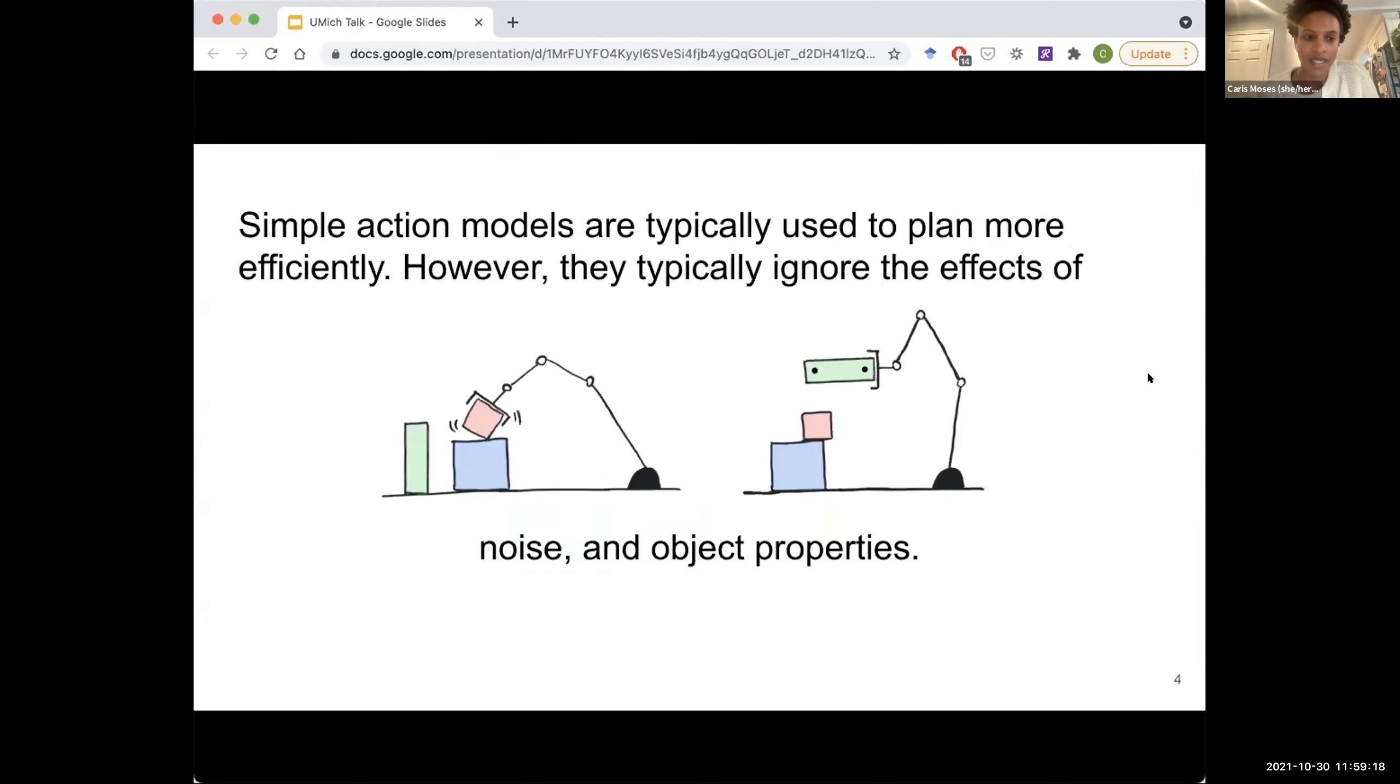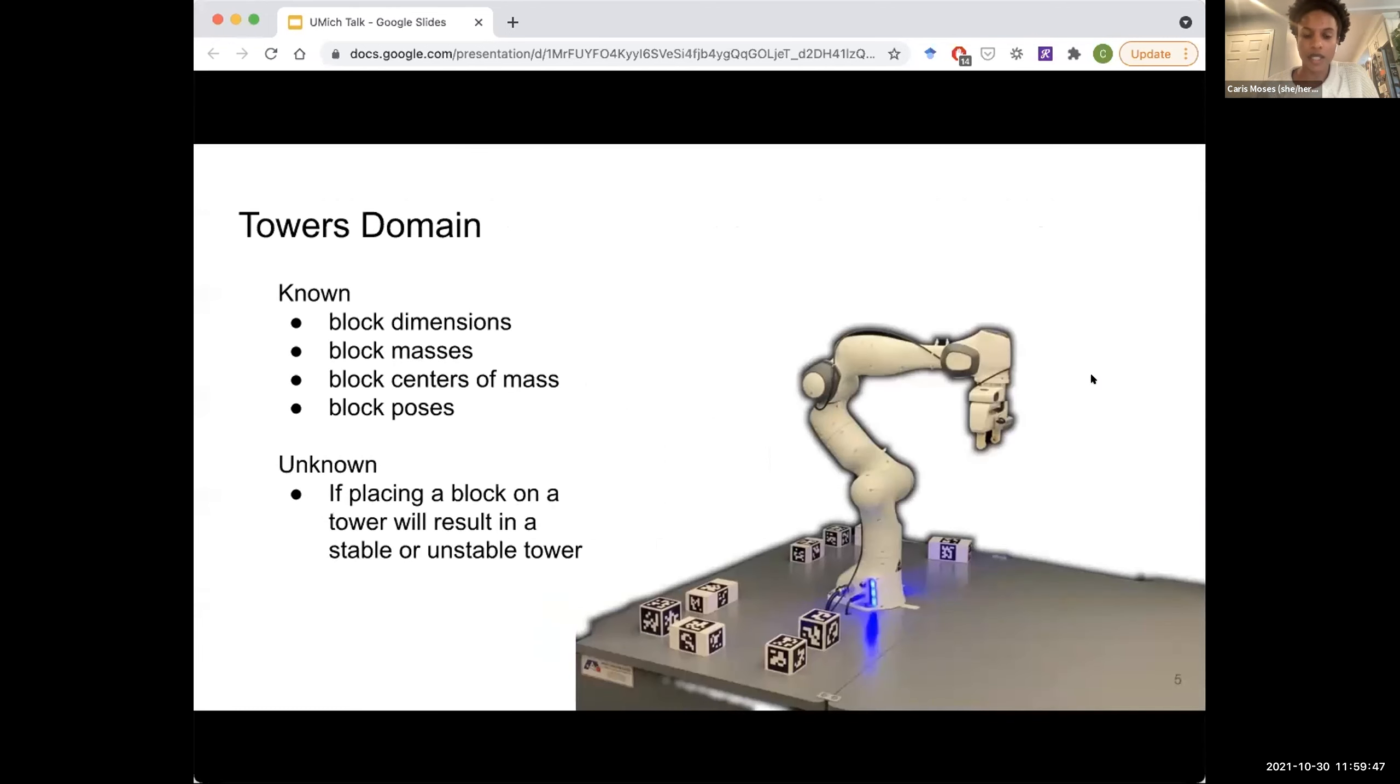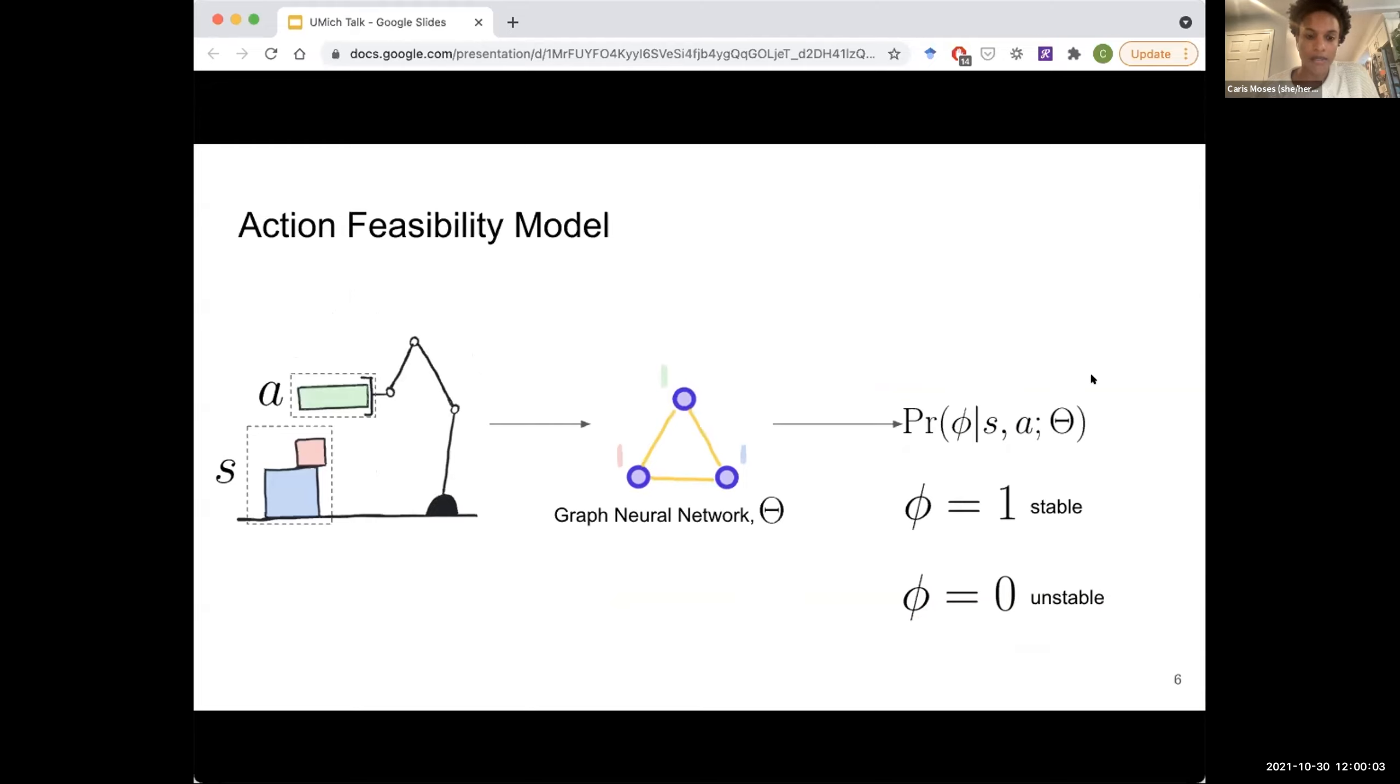And so in this work, we're trying to learn accurate action models which capture real world phenomena such as noise, are learned in a data efficient manner. So kind of like the last talk, we want to be more efficient because collecting data on a robot can be very expensive. And so we need to be mindful of how much time we're spending on the robot to learn these models. And we want something that generalizes over different planning problems. We don't want what we learned to be useful for just one task, but multiple. And so in this work, the robot is actually given object properties directly. But what it needs to learn is how these objects interact. So specifically in this work, if it builds a tower of specific objects, will it be stable or not?